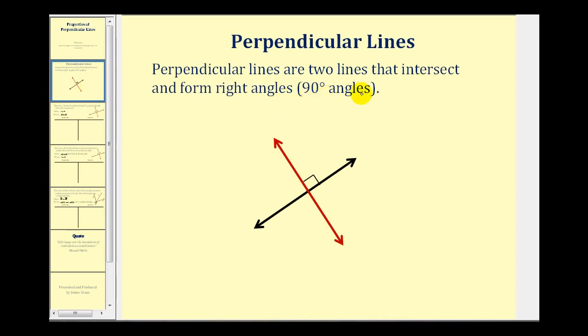Perpendicular lines are two lines that intersect and form right angles or angles that measure 90 degrees. Here we see a red and black line that are perpendicular.